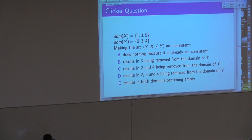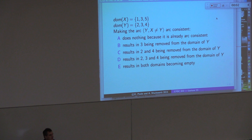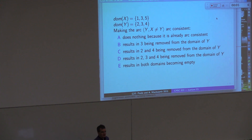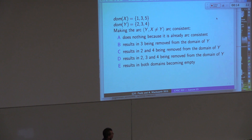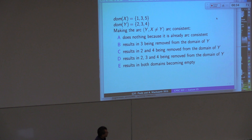Let's do a couple of clicker questions — this is like the one most people got wrong last time, so let's retry and see if we learned anything. Domain of X is {1, 3, 5}. Domain of Y is {2, 3, 4}. Making the arc (Y, X), constraint X ≠ Y, arc consistent. A: does nothing because it's already arc consistent. B: results in 3 being removed from Y. C: results in 2 and 4 being removed from Y. D: results in 2, 3, or 4 being removed from Y. E: results in both domains becoming empty.